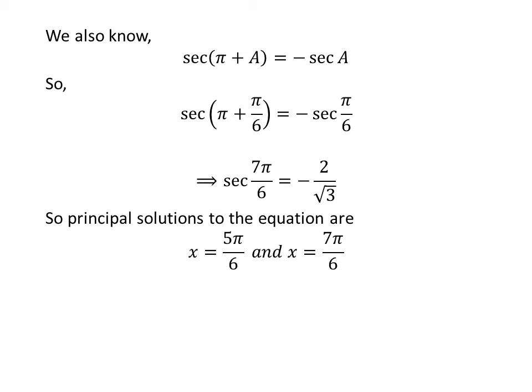So the principal solutions to the equation secant of x is equal to minus 2 upon square root of 3 are 5 times pi upon 6 and 7 times pi upon 6.